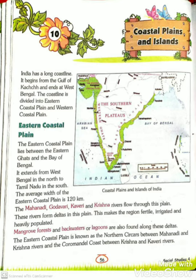The coastline is divided into Eastern Coastal Plain and Western Coastal Plain. This green area that is called the coastline is divided into two parts: Eastern Coastal Plains and Western Coastal Plains. Now let's see the Eastern Coastal Plain.